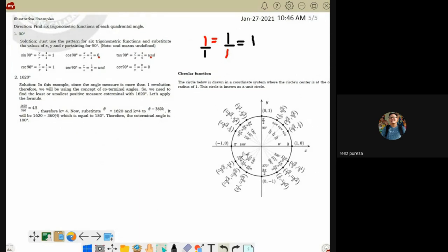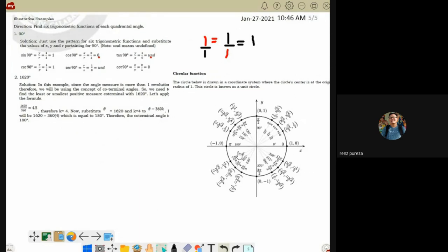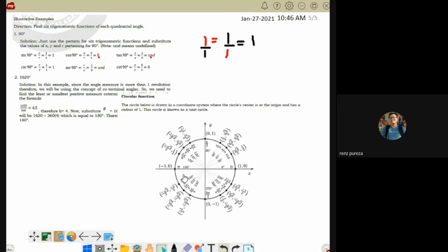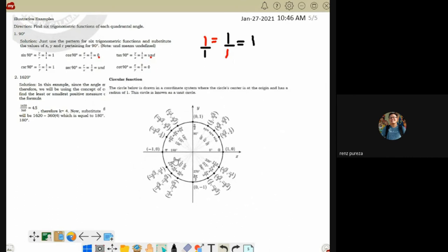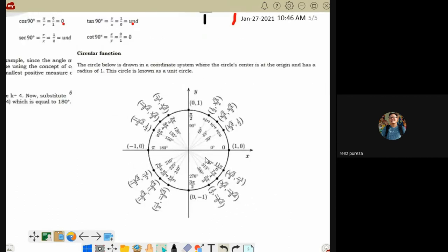180. So from here, we already know sine. Our sine is 0, or rather our cosine is negative 1, and so on and so forth. Now, the question is - what if I don't want to find the coterminal angle?